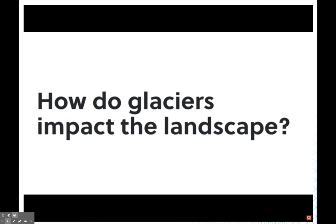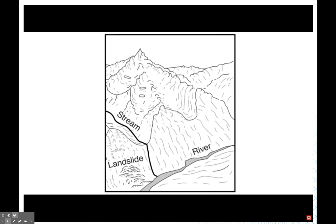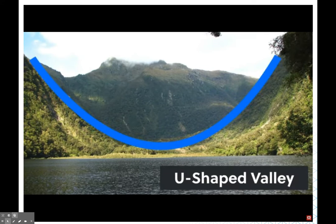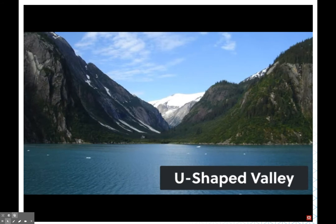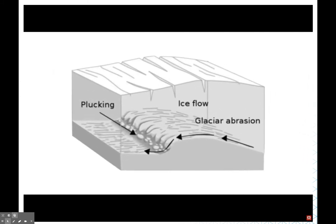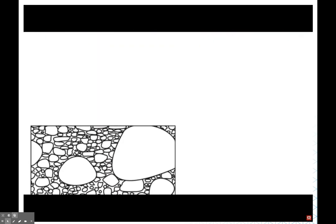The most important thing to look at with glaciers is how they impact the landscape. Glaciers grind down rock on both sides and the bottom of the area where they're moving, resulting in a large U-shaped valley. As glaciers grind over bedrock they scratch it, leaving behind marks and grooves called striations. Striations are important because they reveal the direction the ice was moving before it melted — by looking at them we can draw an inference about ice flow direction.